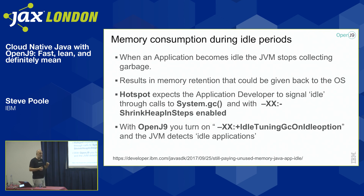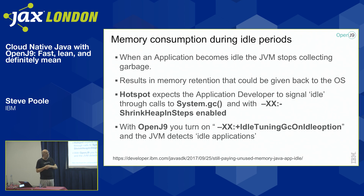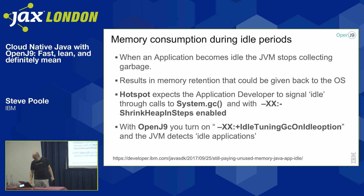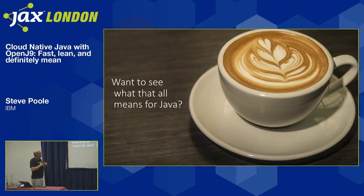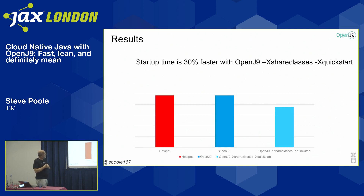Once you do a GC and do any sort of memory compaction, you've got pages of memory you can give back to the operating system. It doesn't affect you as an application developer, but it means another application running on that machine can use that memory. So you can actually get more throughput from the machine just by giving back memory when you're not using it.